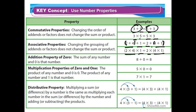The distributive property is probably one of the hardest ones to grasp. Multiplying the sum or difference by a number is the same as multiplying each number in the sum or difference by that number and adding or subtracting the products. So four times (three plus one) equals four times three plus four times one. Similarly, four times (three minus one) equals four times three minus four times one — you're distributing, or giving it out.